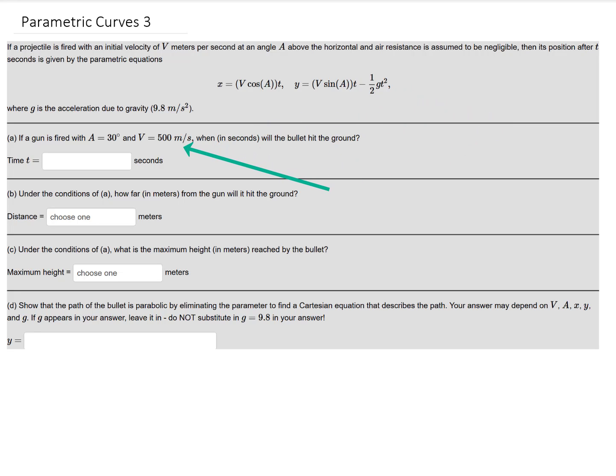If a gun is fired with a equals 30 degrees and v equals 500 meters per second, then when will the bullet hit the ground? What we need to realize is that when the bullet hits the ground is when y equals 0. Obviously the bullet at t equals 0 is going to start at the ground, but then the bullet's going to go up and it's going to come back down and at some time that bullet is going to come back to the ground. We need to find that time.